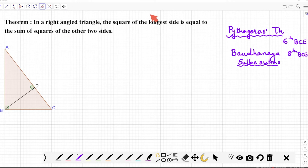Now what does this theorem say? It says in a right angle triangle, the square of the longest side, which is also known as hypotenuse, so the square of the hypotenuse is equal to the sum of squares of other two sides.